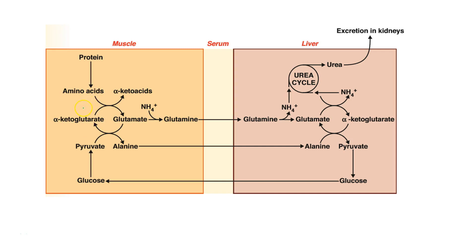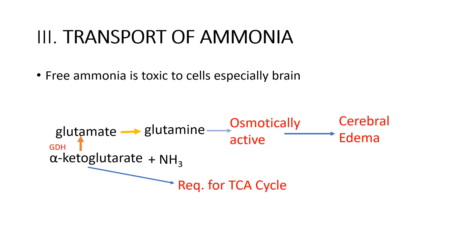To recap the two main steps: transamination, in which amino acids form glutamate, and oxidative deamination, which occurs in the liver mitochondria in the presence of enzyme glutamate dehydrogenase to release ammonia which then enters the urea cycle. Coming on to the transport of ammonia: ammonia is transported as glutamine because it is easily diffusible across tissues. Why is free ammonia toxic to cells? If we look at the action of glutamate dehydrogenase, which is a reversible reaction, increased ammonia will lead to increased glutamate synthesis.